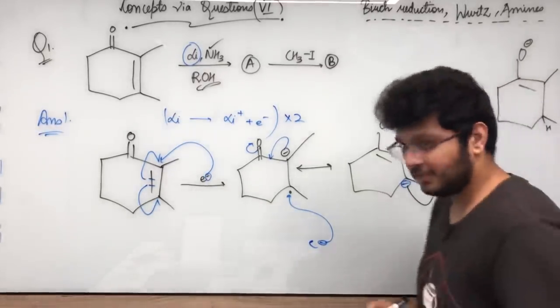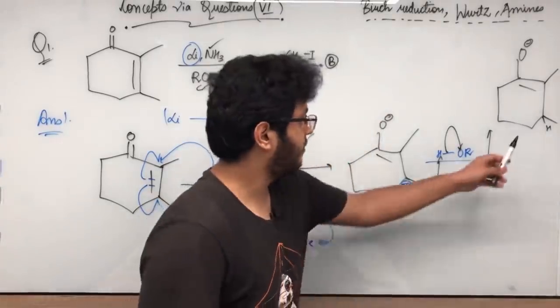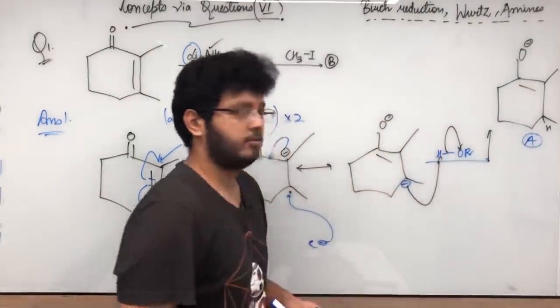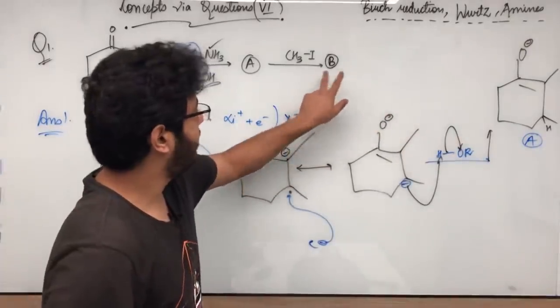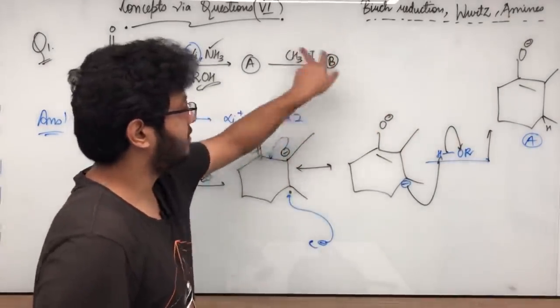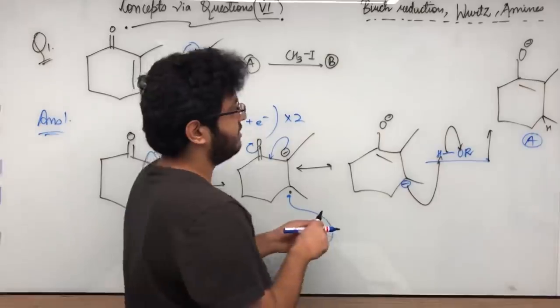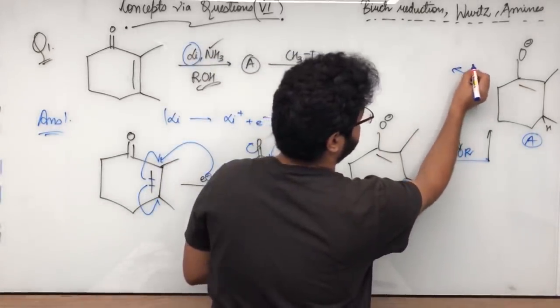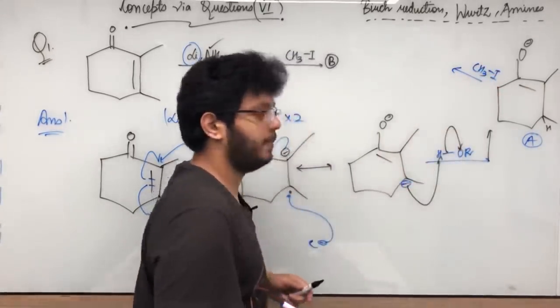Takes out the O-R minus from here to give me the formation of here O minus, double bond, CH3, and here we get a new hydrogen which is attached. So this is Product A which will be formed.